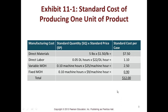Here's an example from Exhibit 11-1 in your book. For direct materials, you have standard quantity times standard price. Someone calculated that it takes .05 direct labor hours times $22 to get your direct labor standard cost per case. Then you have your variable and fixed overhead, and you add them all up to get your standard cost per case. Nowadays with computers, this is much easier than when things were done on paper.